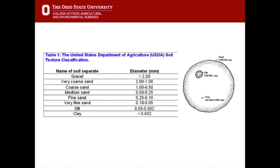Our soils are classified by their size. If a soil particle is greater than 2mm in diameter, we classify that as gravel. Very coarse sand is 2mm down to 1mm, coarse sand is 1 to a half, medium sand a half to a quarter, and so on. The smallest particles are clay, at 0.002mm diameter. Clay particles are very tiny compared to silt, which are again very tiny compared to the larger sand particles.